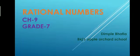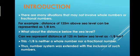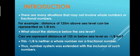Good morning students. Today we are going to start Chapter 9: Rational Numbers. There are many situations that may not involve whole numbers or fractional numbers. For example, a distance of 125 meters above sea level can be represented as 1 upon 8 kilometer.